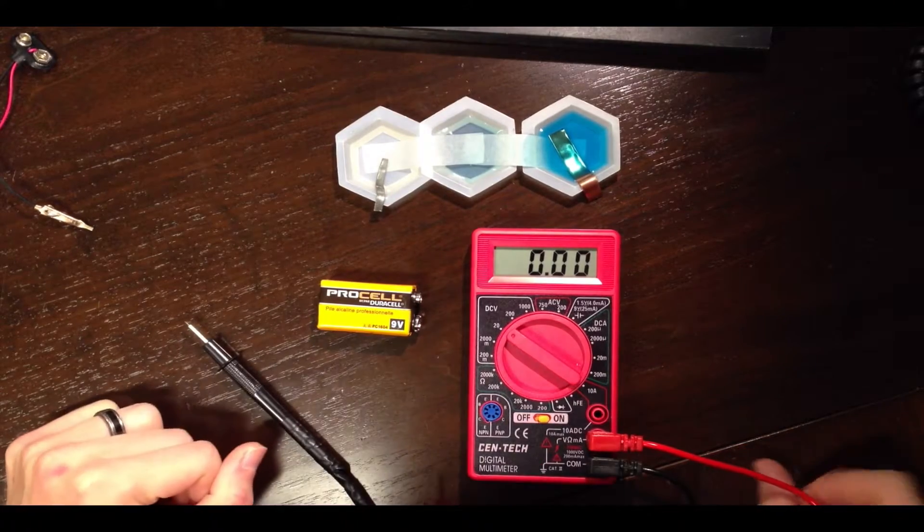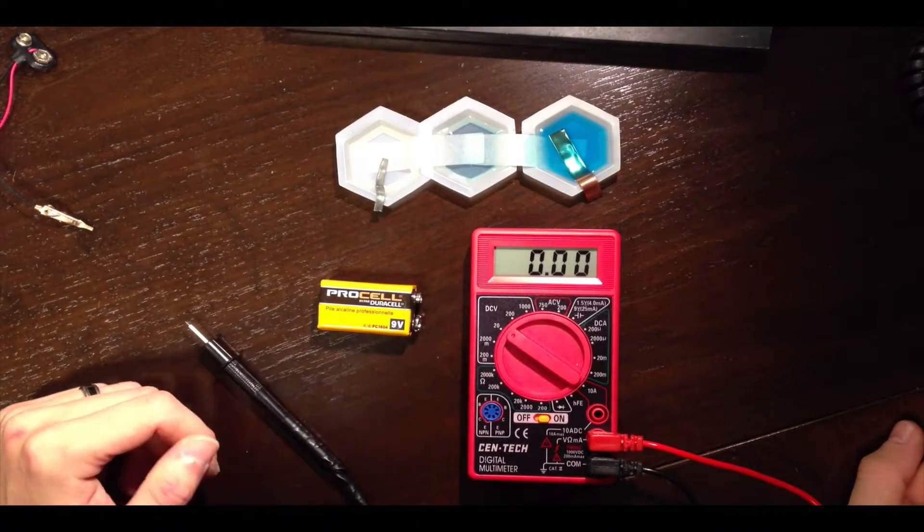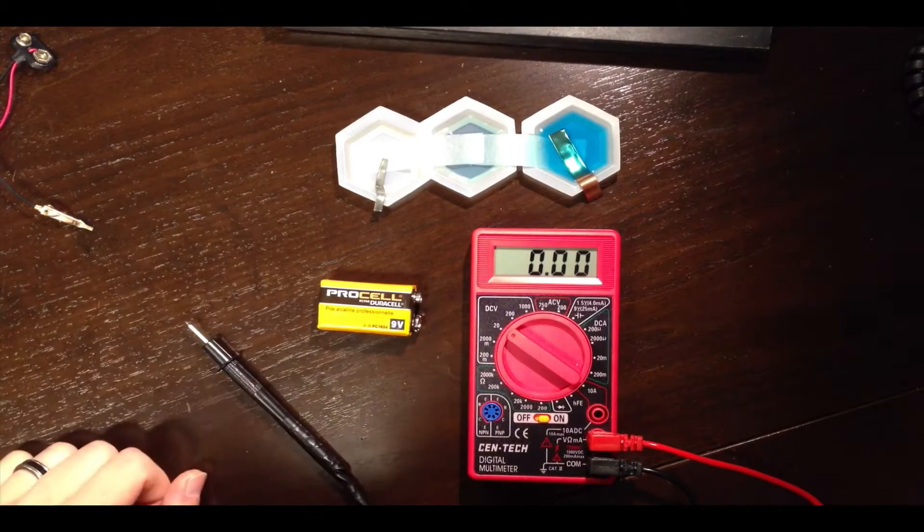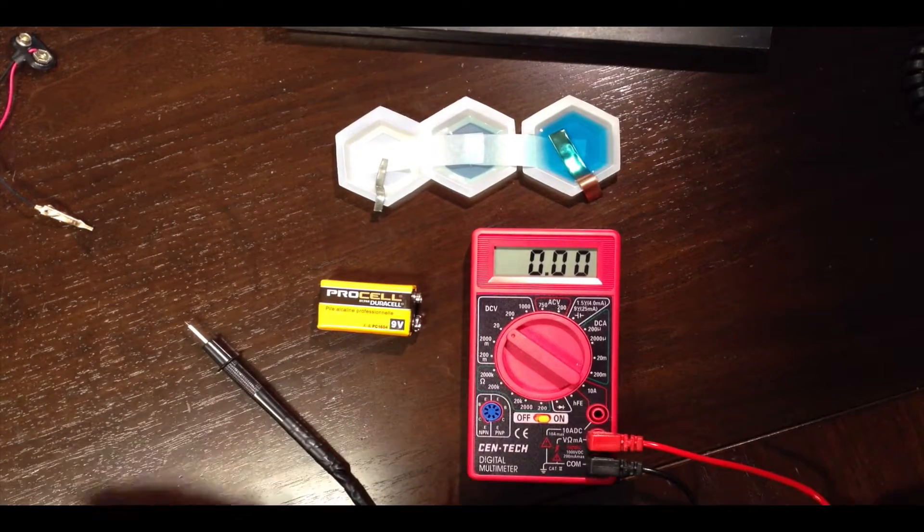In this video, we're going to look at how a multimeter works. A multimeter has the ability to measure current or voltage, and it's going to be highly useful for the electrochemistry experiment.